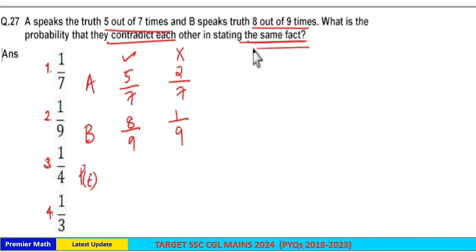When A speaks truth, B should speak lies. When A speaks lies, B should speak truth.